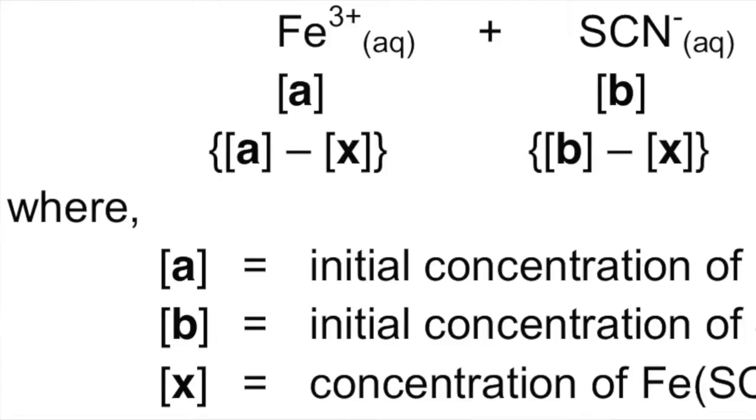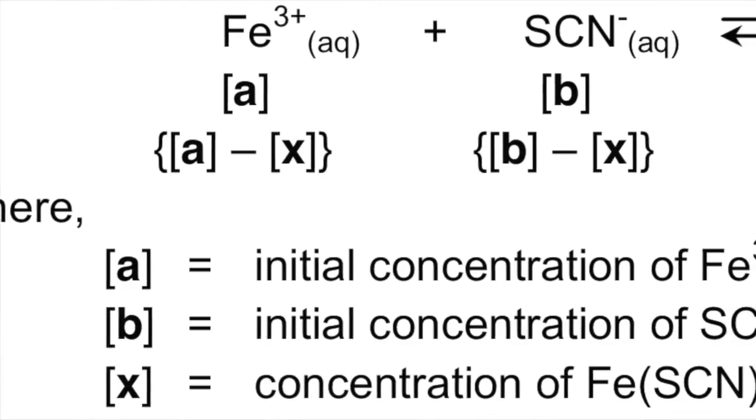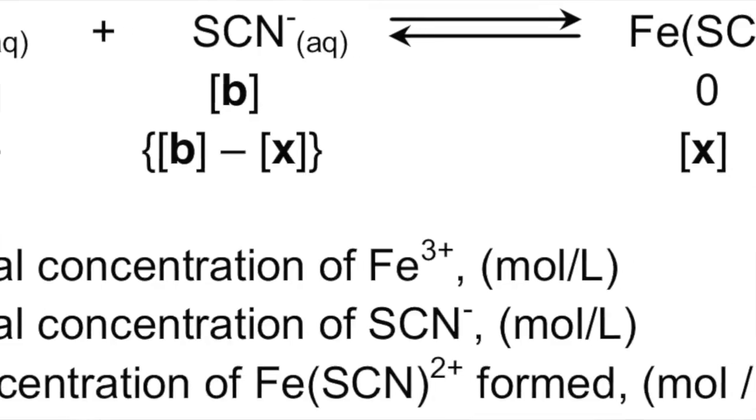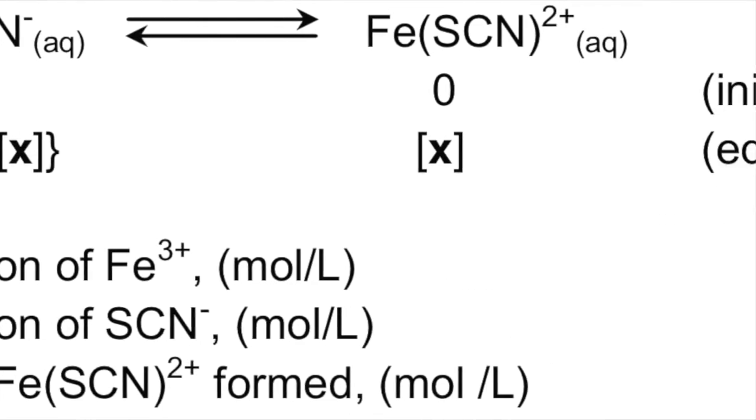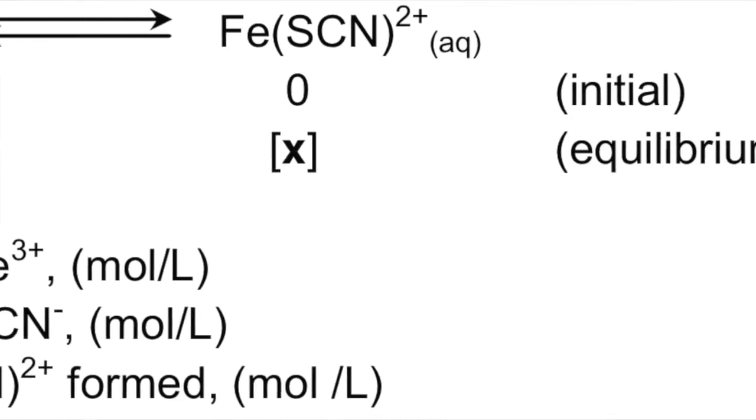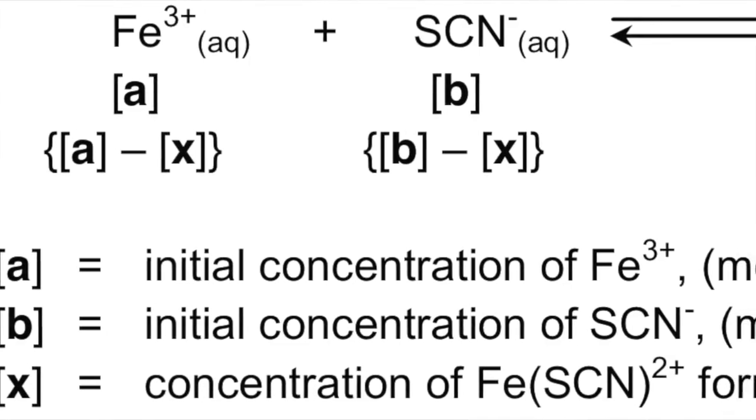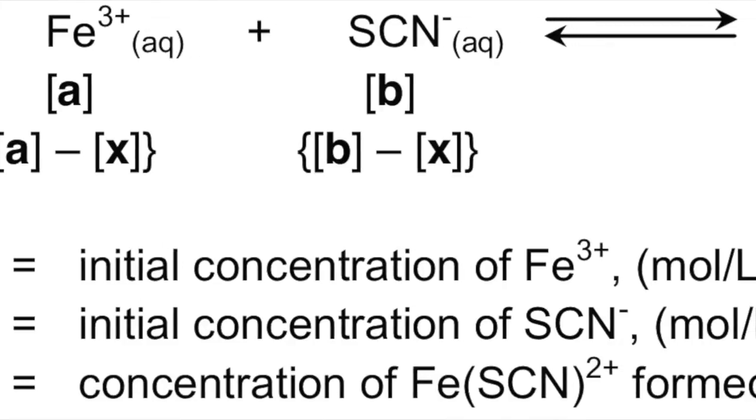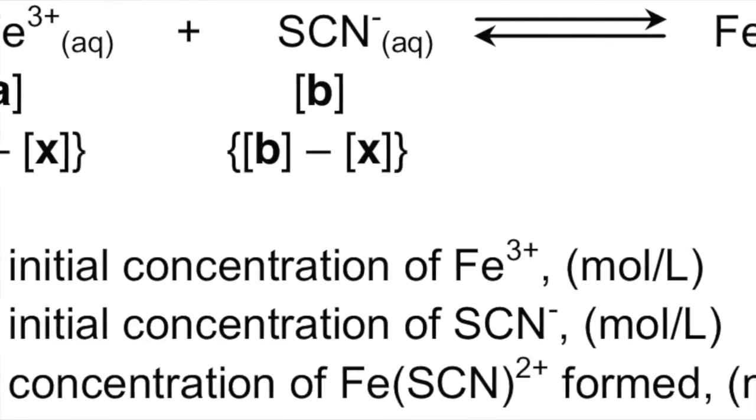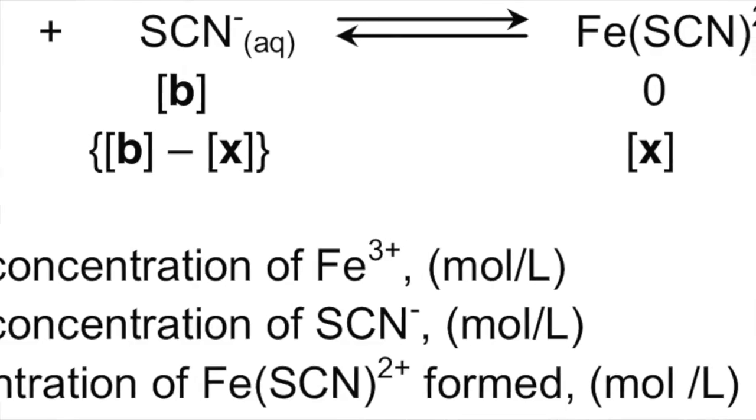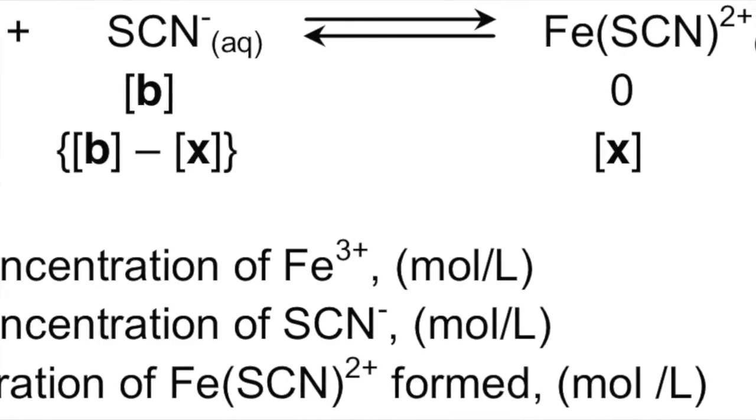The change, since the equilibrium is shifting to the right, is going to be minus x, minus x, and plus x. At equilibrium, the equilibrium concentration of Fe(SCN)2+ is equal to x. We can determine x using Beer-Lambert law by measuring the absorbance.